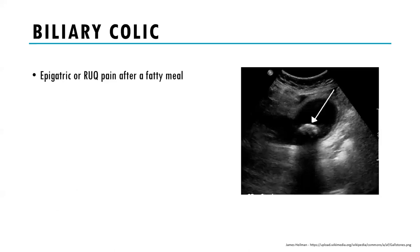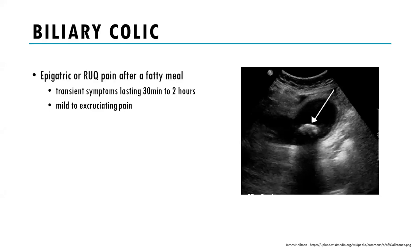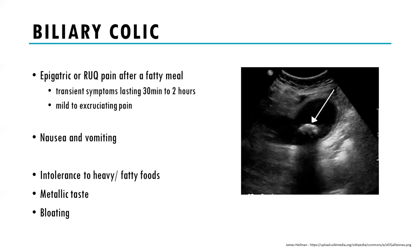Very typically the patient will have epigastric or right upper quadrant pain after a fatty meal. Symptoms tend to be transient, lasting 30 minutes to two hours but can be longer. Pain can be mild to excruciating with that waxing and waning characteristic. Patients sometimes complain of nausea, vomiting, and will typically report that eating fatty foods such as cream cheese or fried food triggers their symptoms. Patients often develop food aversion to particular foods over six to eight months. They may also complain of a metallic taste and bloating.